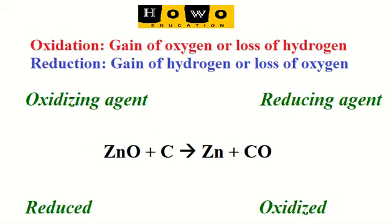Welcome to part 2 of redox reaction. Oxidation and reduction together are known as redox reaction. Oxidation can be gain of oxygen or loss of hydrogen. Reduction can be gain of hydrogen or loss of oxygen.